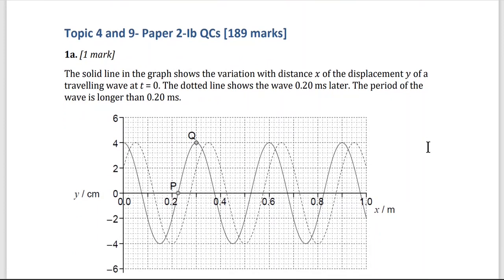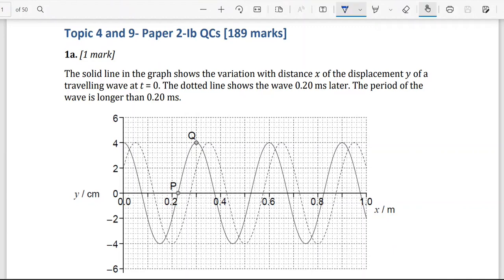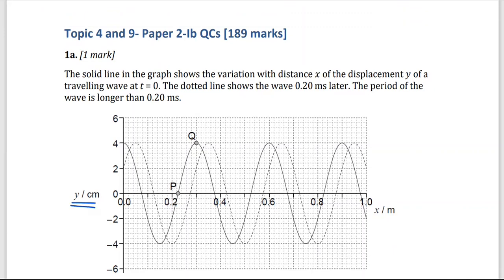The first question we have, the solid line in the graph shows the variation with distance x of the displacement y. So here we have a relationship between the displacement y and distance, traveling distance x, at time t equals 0. The dotted line shows the wave 0.2 millisecond later. And the period of the wave is longer than 0.2 millisecond.